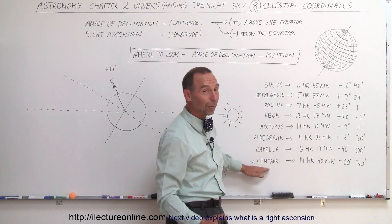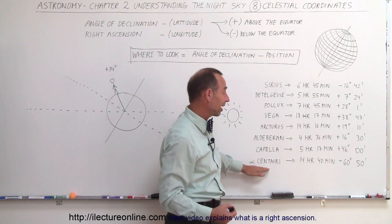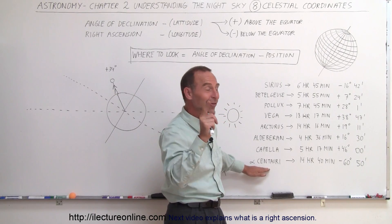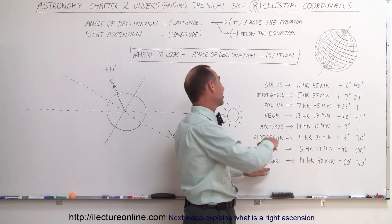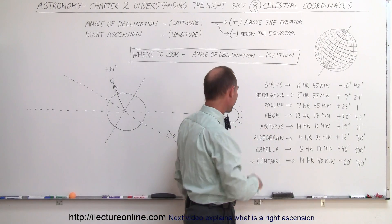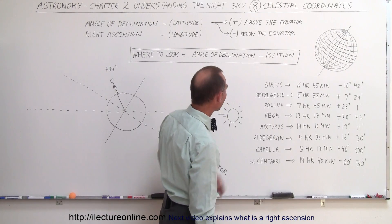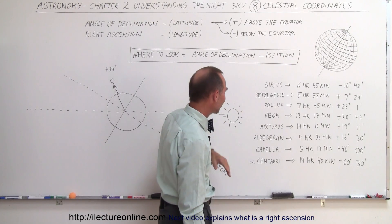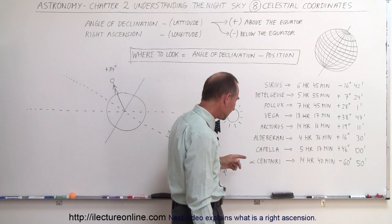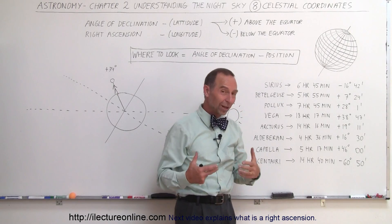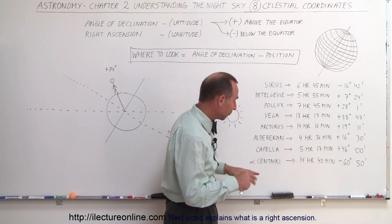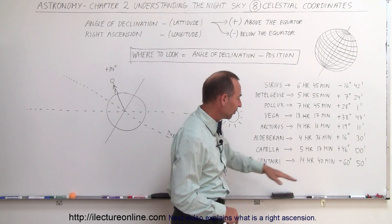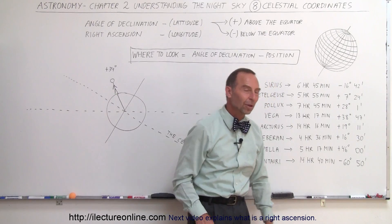Alpha Centauri is the closest star — not the brightest. The brightest star is Sirius. Alpha Centauri is one of the brightest, about the fourth brightest, but it is the closest. It's at minus 60 degrees.